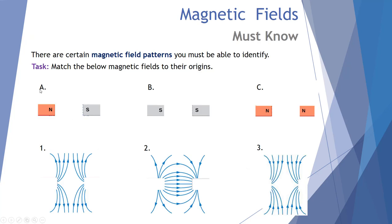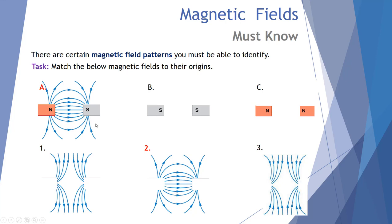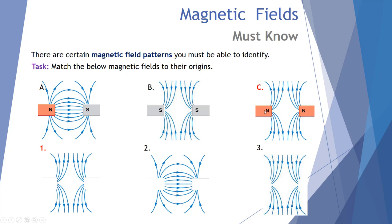Try matching scenarios A, B, and C with field lines 1, 2, and 3. Scenario A matches field lines 2: north to south, strong in between, branching away at the ends. Scenario B is two south poles repelling — lines go towards the south poles, bunching at the poles but never meeting in the middle. Scenario C is two north poles: lines go away from both poles and never touch in the centre because they're repelling.